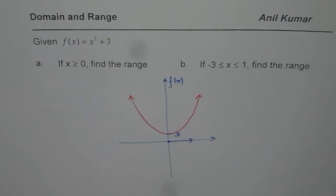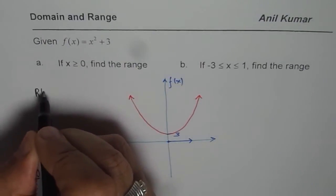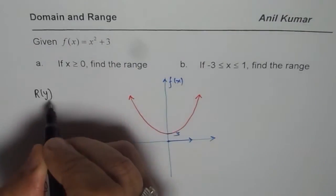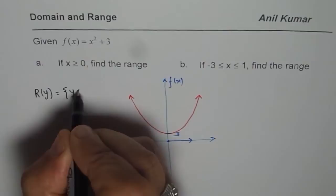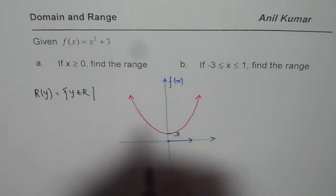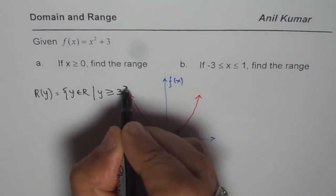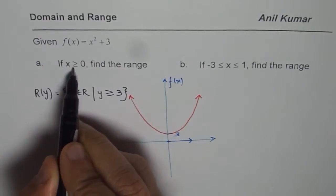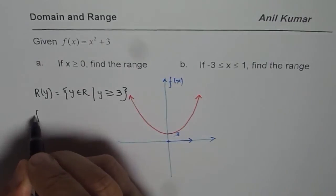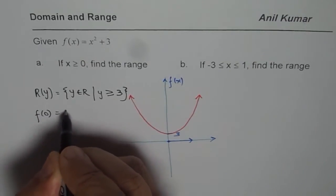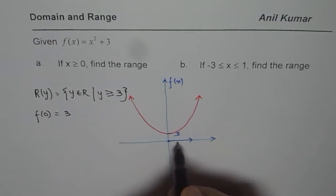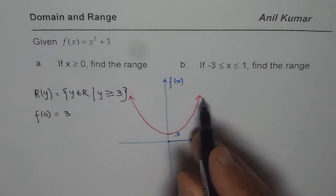As you can see from the graph itself, range in this case will be, you see range which is represented by the y values, will be that y belongs to real numbers, where y is greater than or equal to 3. Because if x is greater than or equal to 0, f of 0 is equal to 3, and as the value of f increases, the function increases.